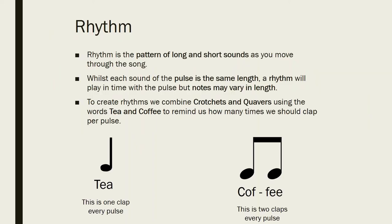Rhythm is a mix of long and short sounds as you move through a song. With that, there's a sense of pulse — remember, the pulse is like the heartbeat of a song that keeps you in time. You use that pulse and write a rhythm around it. We use crotchets and quavers, and we used the words 'tea' and 'coffee' before: tea was one clap, and coffee was two claps with the pulse. So you'd have: tea, tea, coffee, tea — and the pulse stays exactly the same, it does not speed up or slow down.